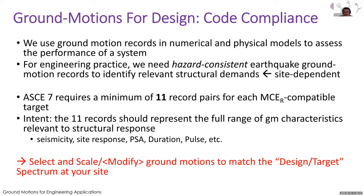For engineering practice, we need hazard-consistent earthquake ground motions to identify the relevant structural demands. When we talk about hazard-consistent, we're talking about site-dependent ground motions. You can't just go in and get some target spectrum because it really depends — whether you're in the central and eastern U.S. versus a crustal zone versus subduction, they're very different types of ground motions. The amplitude also changes based on proximity to a fault. ASCE 7 requires a minimum of 11 record pairs for each MCE-R compatible target.